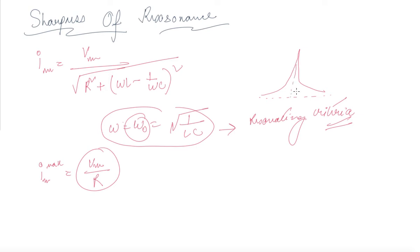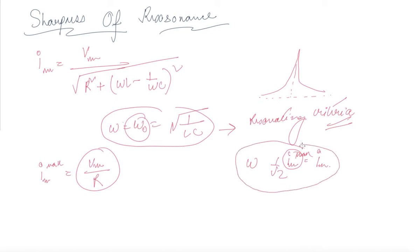Suppose we choose a value of omega for which the current amplitude I is 1 by root 2 times I_max. At this value, the power dissipated by the circuit becomes half, since power P equals I squared times R, so P becomes half of its maximum value.